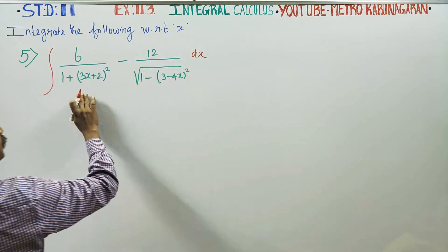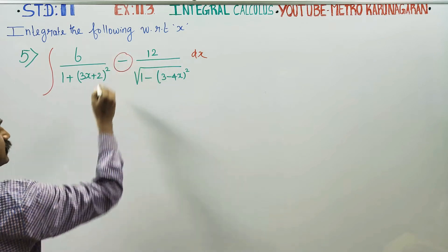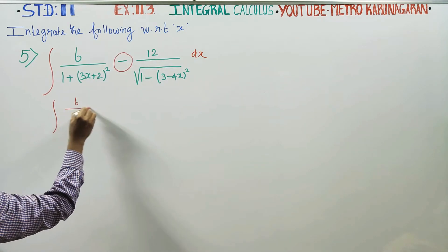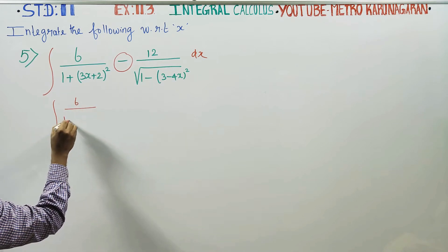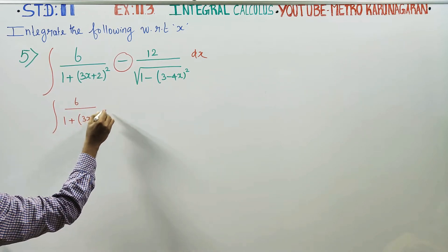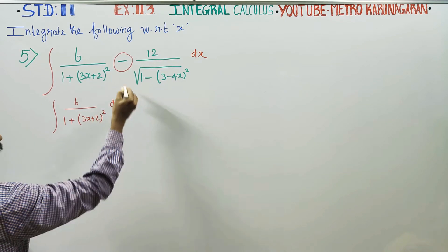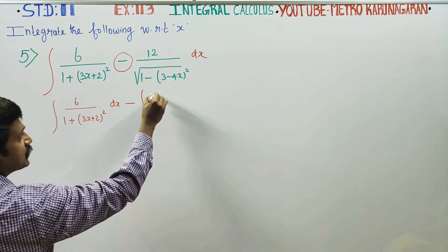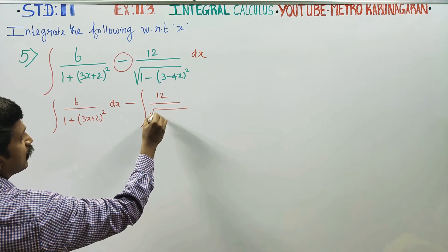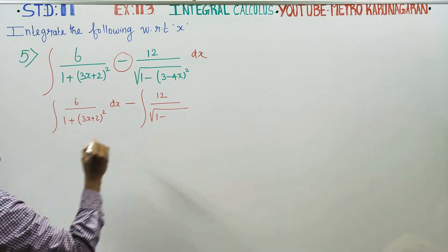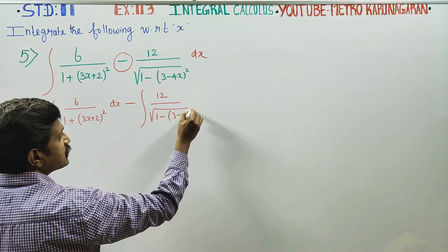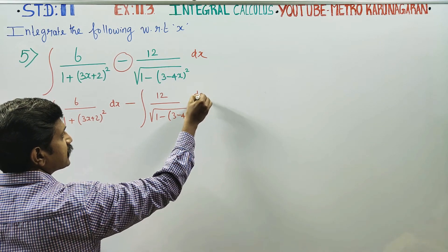The two functions are to be integrated separately. Integration of 6 by (1 plus 3x plus 2) squared dx, minus integration of 12 by square root of (1 minus (3 minus 4x) squared) dx.